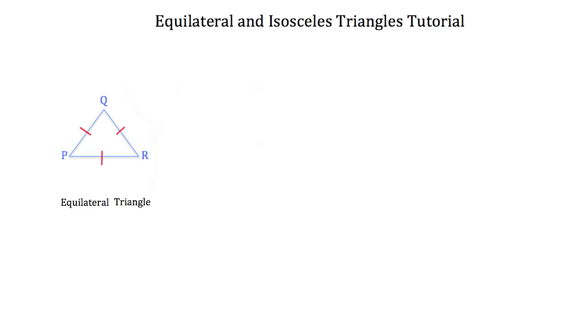An equilateral triangle is a triangle that has three congruent sides. For example, we've drawn triangle PQR. You can tell that side PQ is the same length as side QR, which is the same length as side PR, because they're all congruent as shown by the red congruency tick marks.